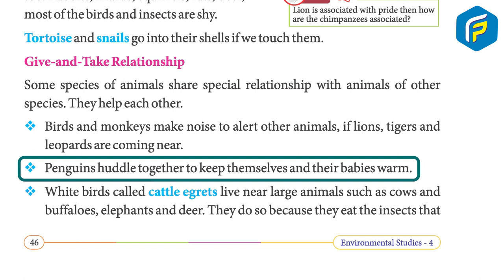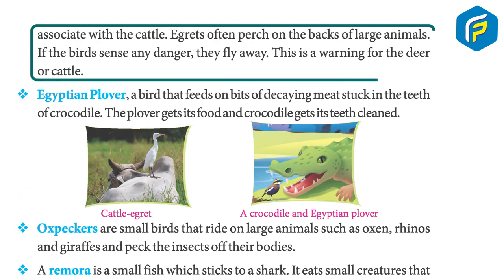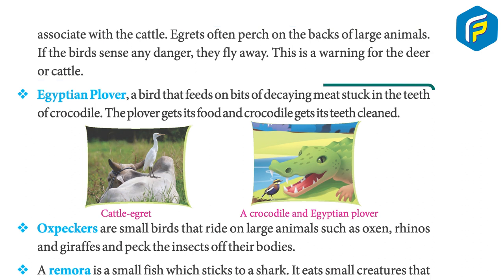White birds called cattle egrets live near large animals such as cows, buffaloes, elephants, and deer. They do so because they eat the insects associated with the cattle. Egrets often perch on the backs of large animals, and if a bird senses any danger, it flies away — acting as a warning for the deer or cattle.